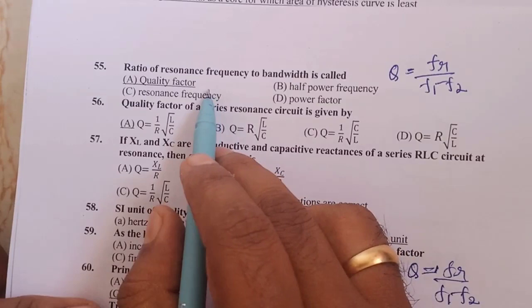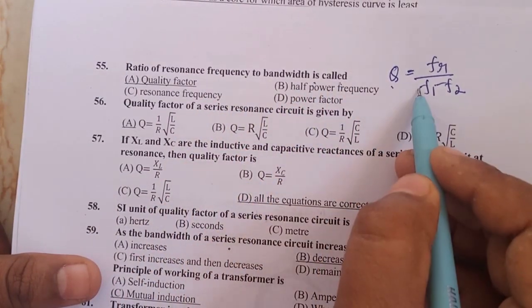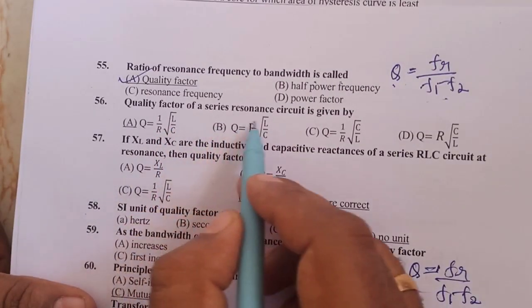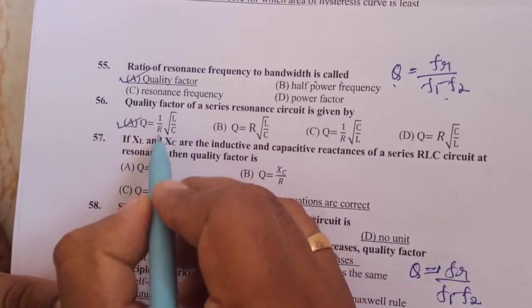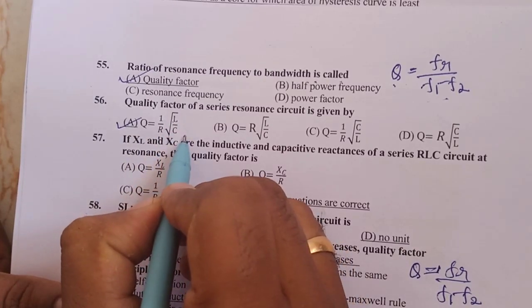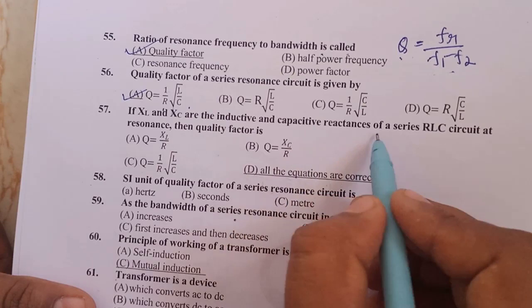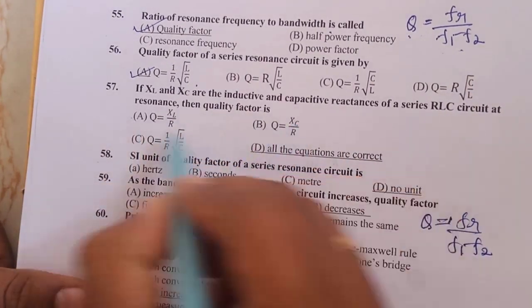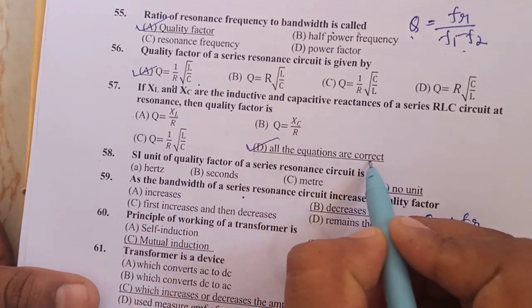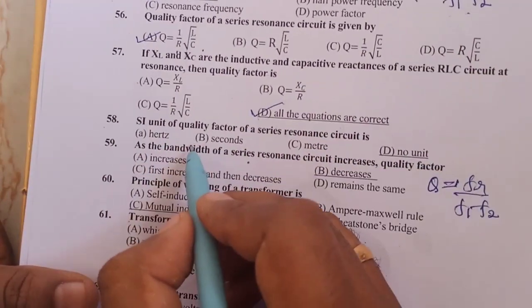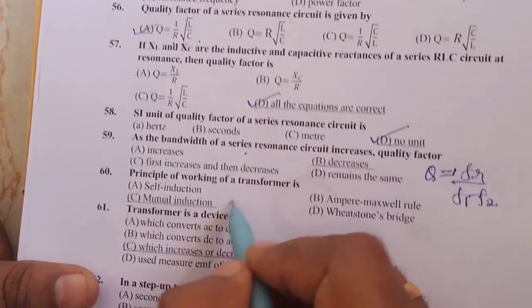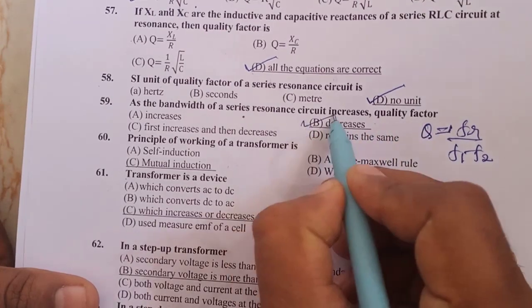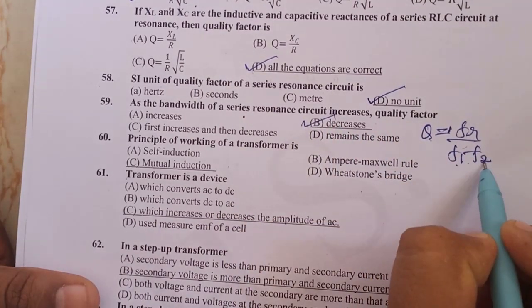Ratio of resonant frequency to bandwidth is called quality factor. Q equals f₀ divided by bandwidth, that is option A. Quality factor of a series LCR circuit is given by Q equals 1 divided by R into root of L/C. If XL and Xc are the inductive and capacitive reactances of the LCR circuit at resonance, then all the given equations for quality factor are correct. Quality factor is just a number, therefore it has no unit. As the bandwidth of a series resonant circuit increases, quality factor decreases, because Q equals f₀ divided by (f₁ minus f₂).